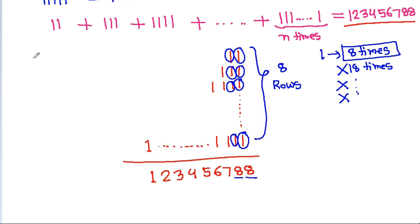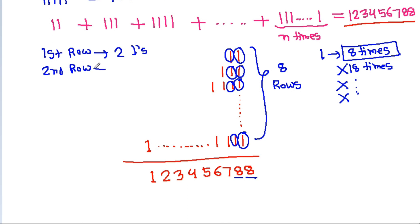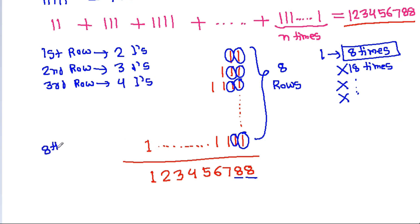There are 8 rows. In the 1st row there are two 1s, in the 2nd row there are three 1s, in the 3rd row there are four 1s, and continuing this pattern up to nine 1s in the 8th row.